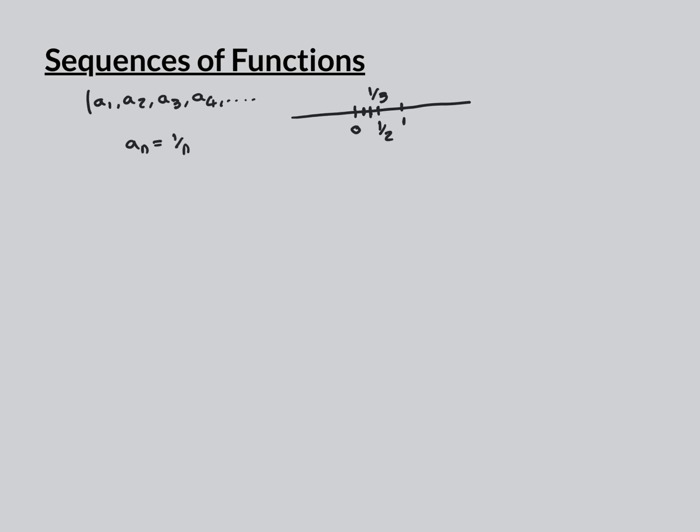We're very familiar with sequences of real numbers, where the terms in the sequence are real numbers. If we take the example where the sequence a_n equals 1 over n, the intuition is that it's a sequence of points in the real line.